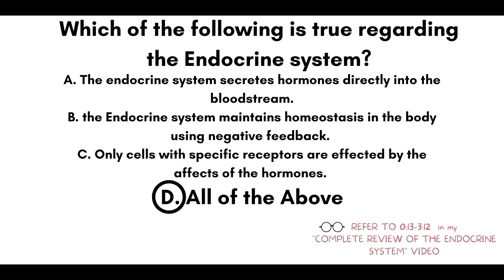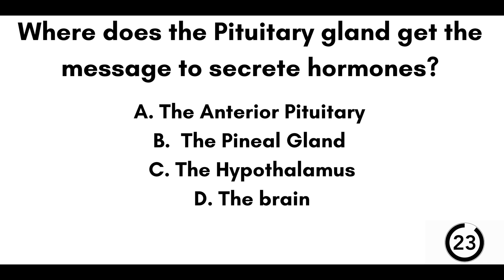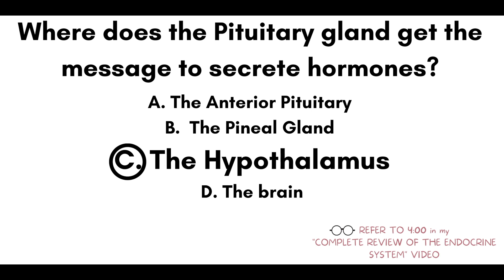If you need some extra help understanding this question and answer, you can always refer to my complete review of the endocrine system video. Question number two: where does the pituitary gland get the message to secrete hormones? A) The anterior pituitary. B) The pineal gland. C) The hypothalamus. Or D) The brain. Our answer here is C, the hypothalamus.